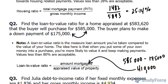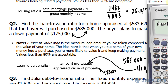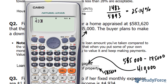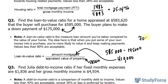That number goes in the numerator of this fraction, and the denominator is the appraised value of the property, which is $583,620. This is the reason why your property gets appraised before buying. So we take $410,000, divide it by $583,620, and multiply by 100 to get a percentage. We get 0.702, so approximately 70.2%. Because this is less than 80%, this is favorable from a lender's perspective.